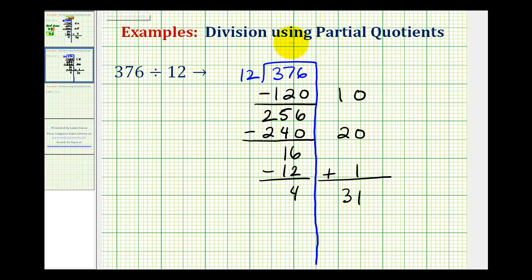So our quotient is 31 remainder of 4, or as a mixed number, we would have 31 and 4 twelfths, which again does simplify. Again, they both contain a factor of 4, so this simplifies nicely to 31 and 1 third. Again, our quotient can be expressed correctly in this form here, or this form here.